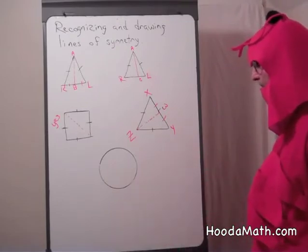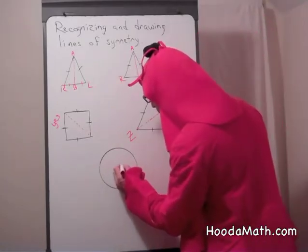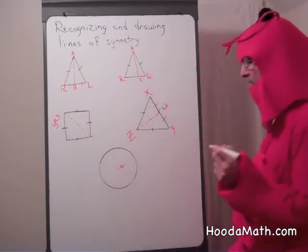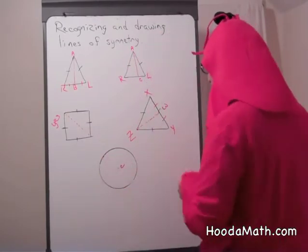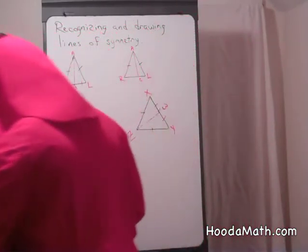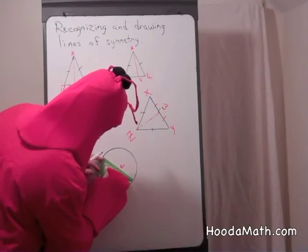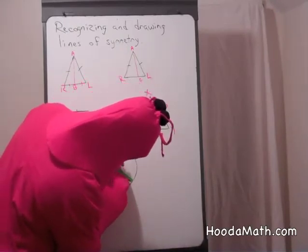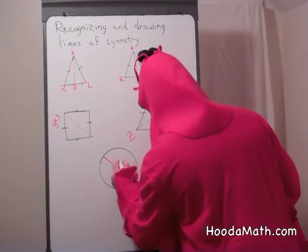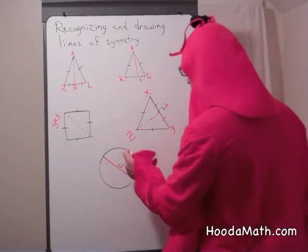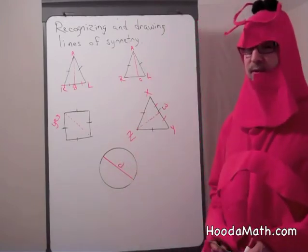Finally, a circle. You can make a line of symmetry if you know the center of the circle — we'll call the center C. If you take any straight line that starts at one side of the circle, goes through the center, and goes all the way to the opposite side, you will have a line of symmetry. You have to go through the center to the opposite side. If I took a point here, and as long as I went through the center to the other side, that would also give me a line of symmetry.